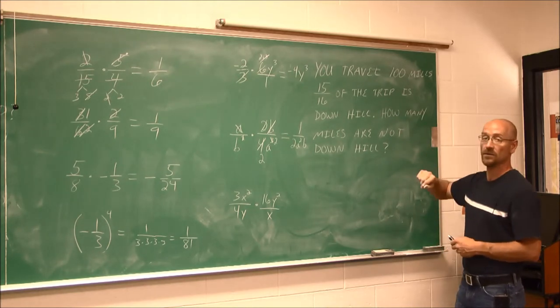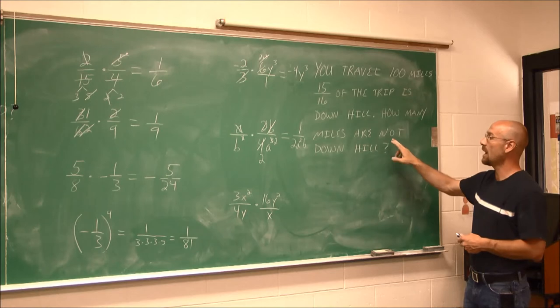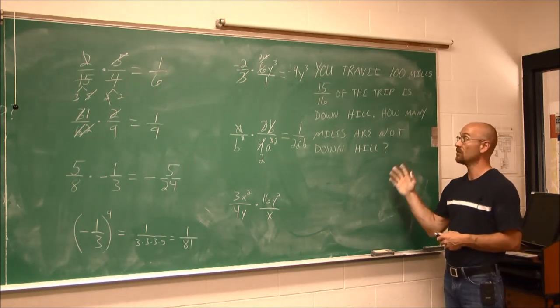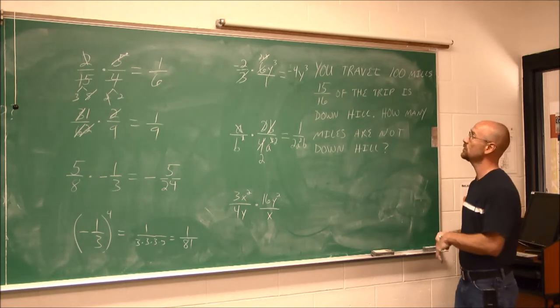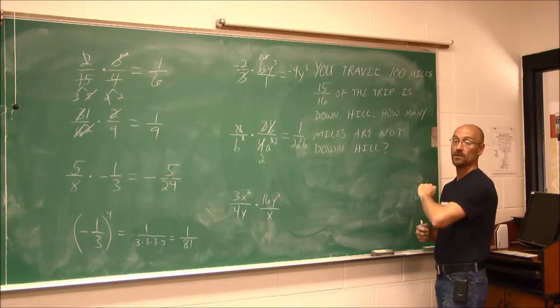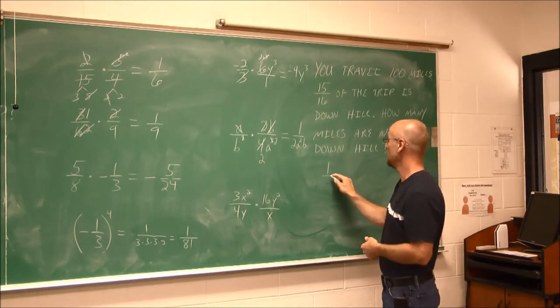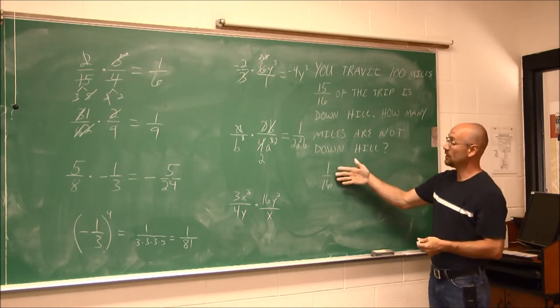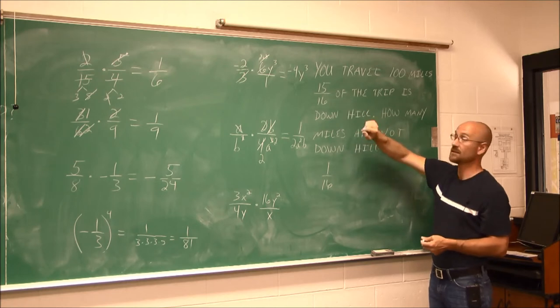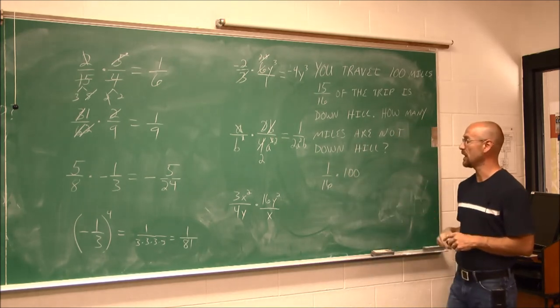Lastly, you travel 100 miles. 15 sixteenths of the trip is downhill. Maybe you're coming out of the mountains after a camping trip. How many miles are not downhill? If you remember the last example with the marbles, if we knew how much we had that were red, we wanted to know how much we didn't have. This is very similar, but we have to do a little multiplication. You travel 100 miles, 15 sixteenths of the entire trip is downhill. We want to know how much is not downhill. What's the remainder of the whole? To have 16 sixteenths, I would need one more. So I have 1 sixteenth of the trip is uphill. If we're going 1 sixteenth uphill, does that answer the question? No, it doesn't. It says how many miles. 1 sixteenth isn't the distance I traveled. It is 1 sixteenth of 100.